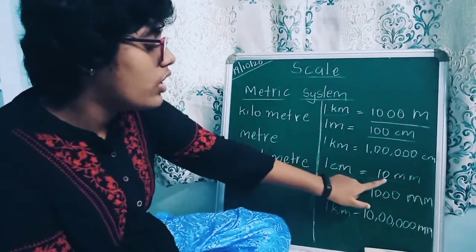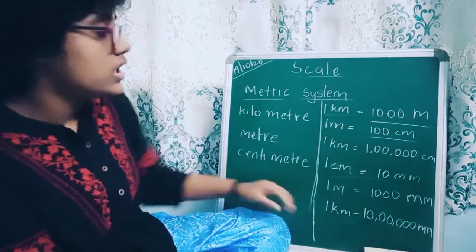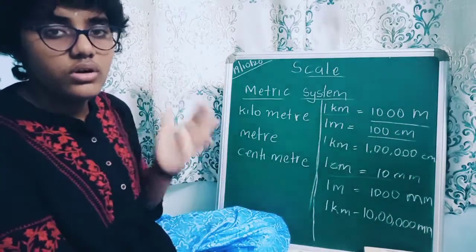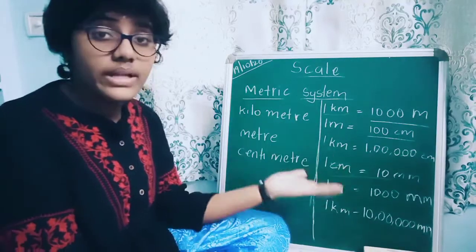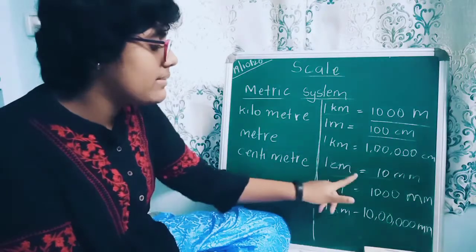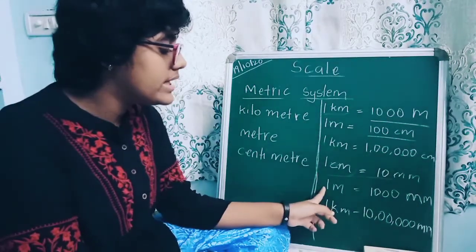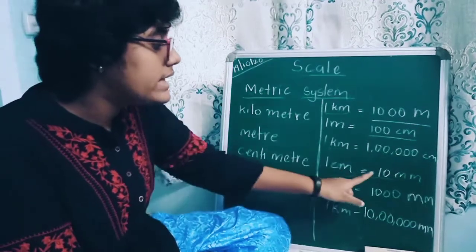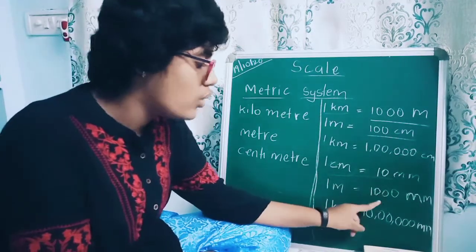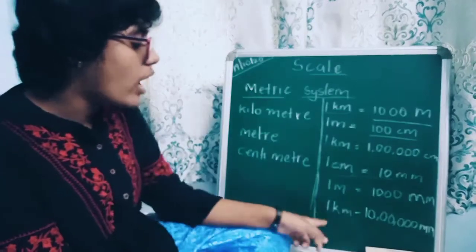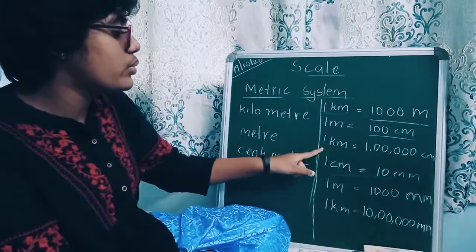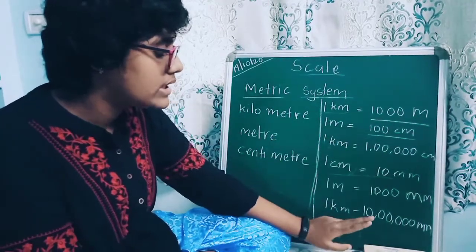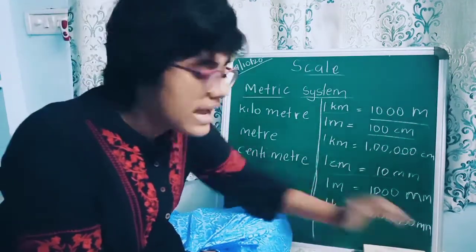Next: 1 centimeter equals 10 millimeters. This is not part of the main metric system listed here, but for your extra knowledge I have written millimeter. The relation: 1 centimeter equals 10 mm. Then 1 meter equals how many mm? We multiply 10 into 100 to get 1000 — so 1 meter equals 1000 mm. And 1 kilometer equals 10 lakh mm, since 1 lakh centimeters multiplied by 10 gives 10 lakhs mm.